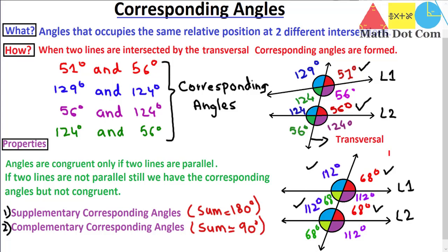That's all from today's lecture. I hope your concept regarding corresponding angles is now clear — that corresponding angles are not only formed by two parallel lines intersected by a transversal, but also by two non-parallel lines, and corresponding angles are not always equal; they are equal only if the two lines are parallel. In the next lecture I will tell you how to find corresponding angles when given just one single angle.